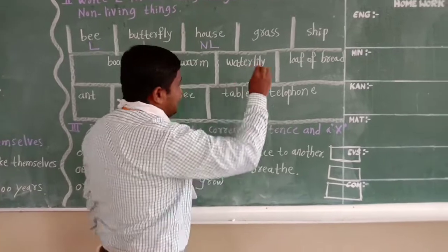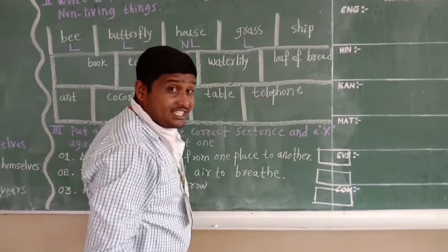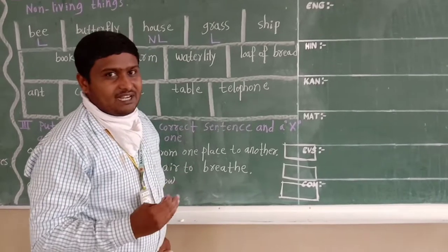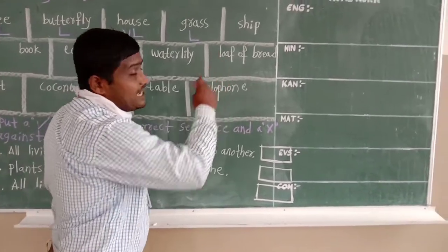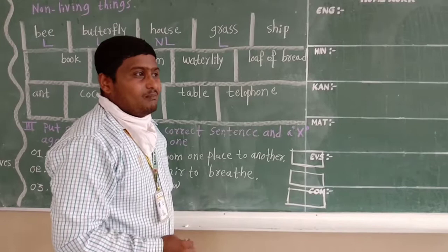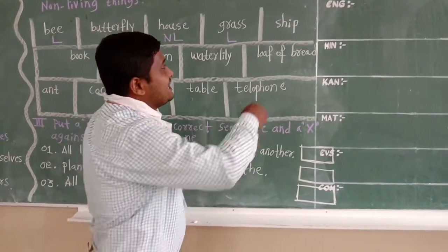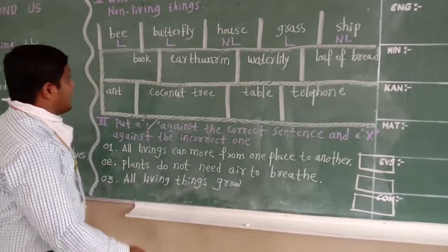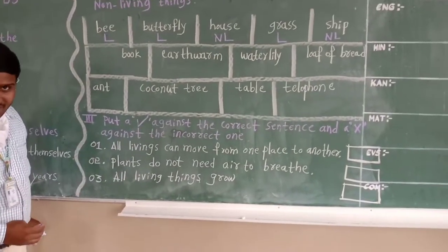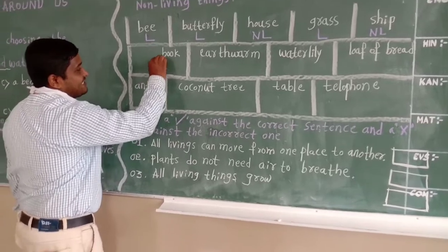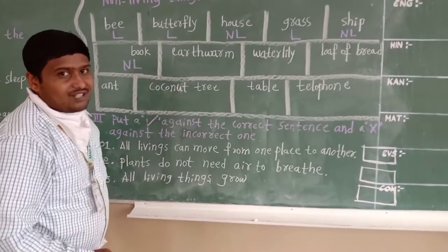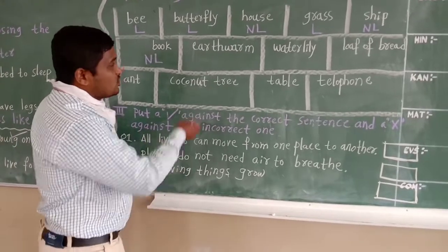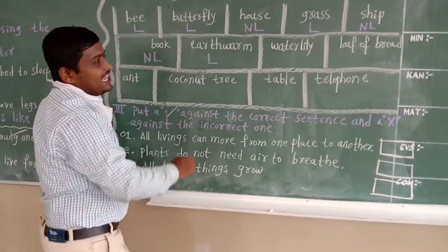Grass — living things. Ship — ship is non-living things. Ship means boat, so this is non-living things. Next: books — living things or non-living things? Non-living things. Earthworm — this is one type of small insect, so it is living things.